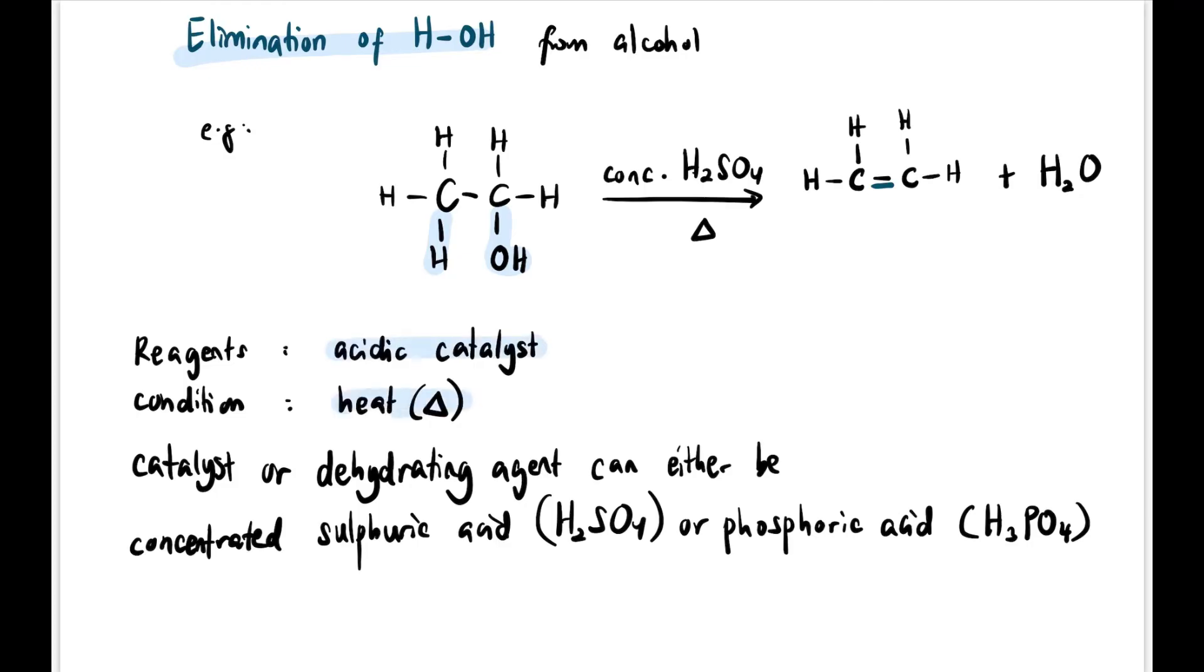The reagent must be an acidic catalyst and the condition must be hot or heat, which we symbolize with a triangle. The catalyst or dehydrating agent can be either concentrated H2SO4 or concentrated phosphoric acid H3PO4. That's how we start from alcohol to alkene and water.